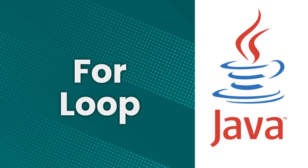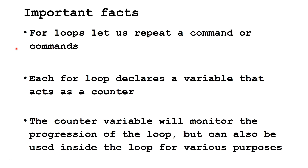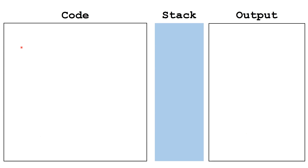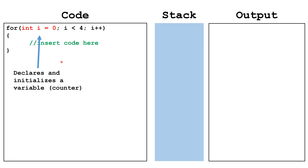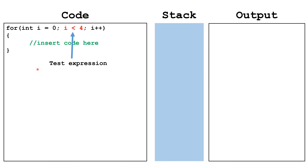We'll start by learning about for loops. For loops let us repeat a command or commands. Each for loop declares a variable that acts as a counter. The counter variable will monitor the progression of the loop, but can also be used inside the loop for various purposes. The header of the for loop has three parts. The first part declares and initializes a variable that acts as a counter. The second part, the test expression, checks to see if the for loop will continue.